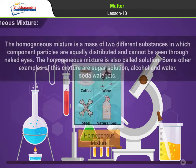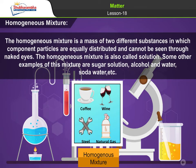1. Homogeneous mixture. The homogeneous mixture is a mass of two different substances in which component particles are equally distributed and cannot be seen through naked eyes. The homogeneous mixture is also called solution. Some examples are sugar solution, alcohol and water, soda water, etc.